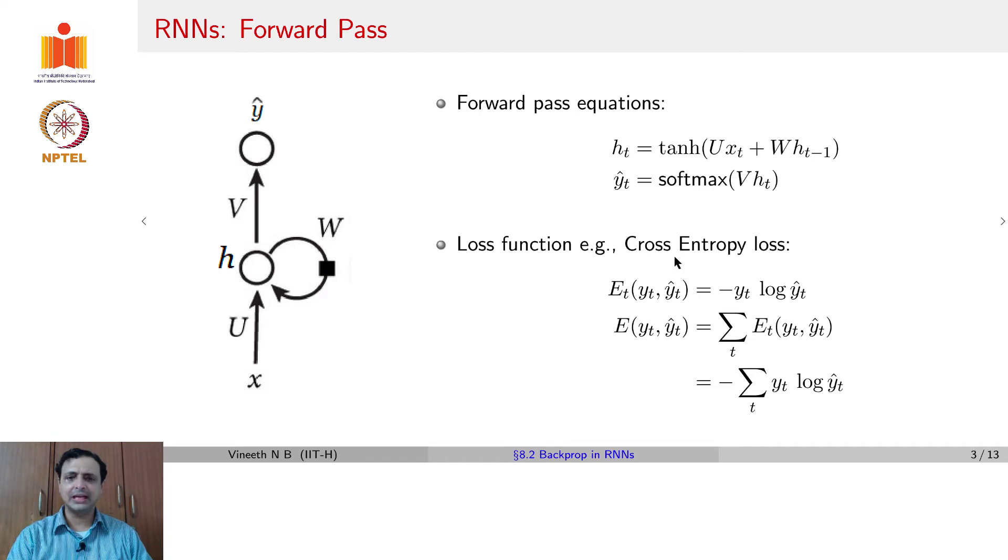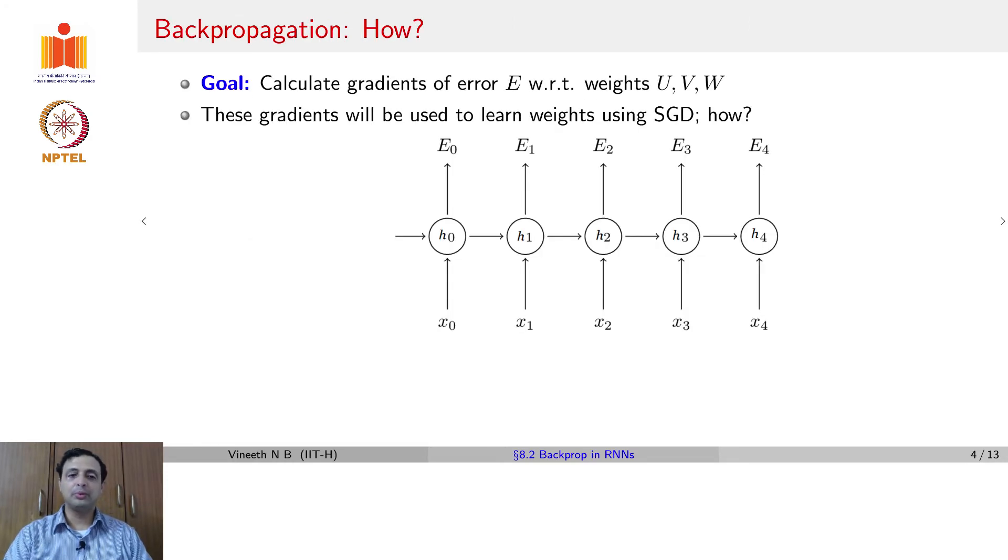What is the cross entropy loss in this setting? You could have, because it is a classification problem, you could have the standard cross entropy loss as given by this formula. Now, if we want to compute the gradients of error E with respect to the three sets of weights that we have here, u, v and w. Let us assume that these gradients are going to be used to update the weights using stochastic gradient descent,